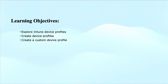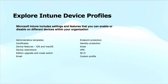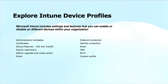Intune device profiles include lots of settings and features for different platforms — be it Windows, iOS, iPadOS, macOS, or Android — and these device profiles are assigned to devices or device groups. These settings include administrative templates, which provide group policy-like settings for managing Windows devices, controlling the system configuration and user behavior. You can think of these administrative templates the same as on-premises group policy templates used for configuration management of devices.